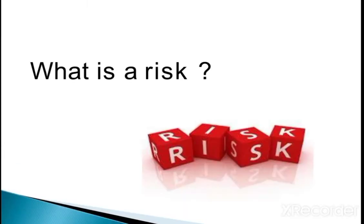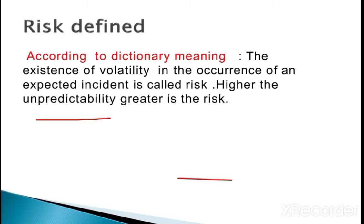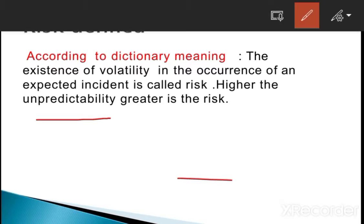The first question that arises is: what is risk? Risk means unexpected return from the market, unpredictable things from the market. Risk means the existence of volatility in the occurrence of an expected incidence is called risk. When we talk about volatility and predictability, that is the risk. We are not going to predict about the future, and the higher the unpredictability, the more the risk will be in the market.